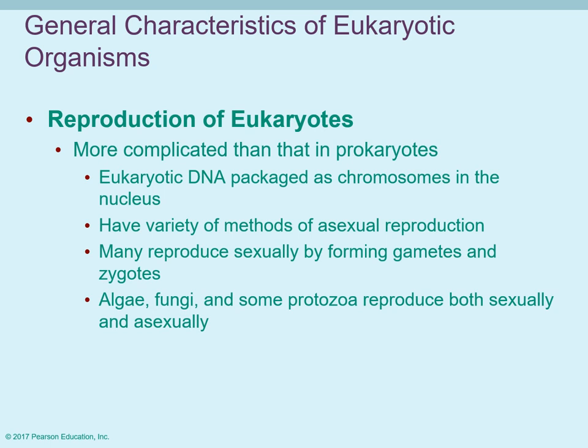Reproduction of eukaryotes is a little bit more complicated than in prokaryotes. Prokaryotes like to keep it short, sweet, and simple. It's a little bit more complicated with eukaryotes. Their DNA is packaged in the nucleus, so it's in a separate part of the cell. There are a variety of asexual reproductive methods that can occur depending on the species. Many will reproduce sexually by forming gametes, which are the sex cells and the zygotes. Some eukaryotic organisms, like some algae, some fungi, and a few protozoans, can reproduce both sexually or asexually.